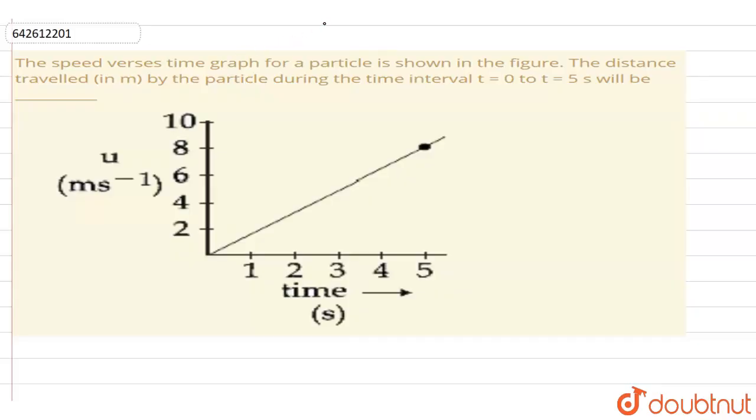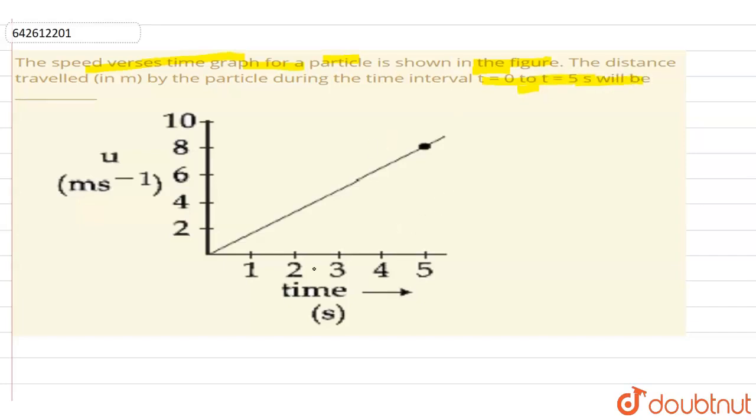With this question, the speed versus time graph for a particle is shown in the figure. The distance travelled by the particle during the time interval t equals 0 to t equals 5 seconds will be. Now here if you look at the graph,